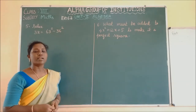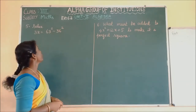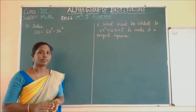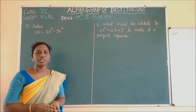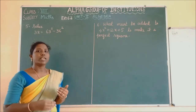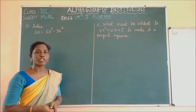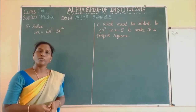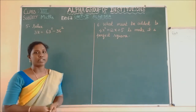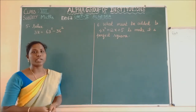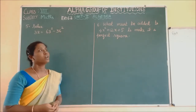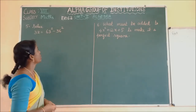In our previous class, we completed up to the 4th problem. Now we are going to solve the next problem in exercise 6.2 — problem number 5. In further problems, we are going to use the same identities, but we will see more ways of solving.